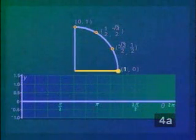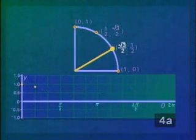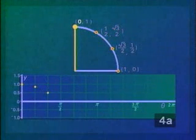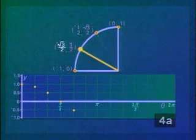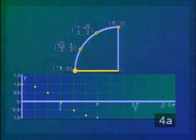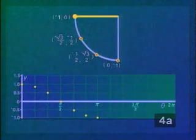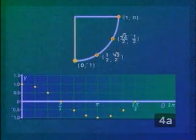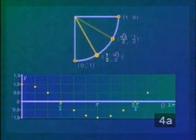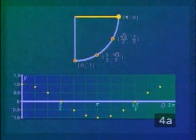Using a similar process, we can graph the function F of theta equals cosine theta. Remember the cosine of these angles was given as cosine theta equals the x-coordinate of the point P. Again, using the angle measures along the horizontal axis, and now taking the corresponding x-coordinates from the points P, X, Y, around our circle of radius 1, we can plot the points theta, cosine theta.